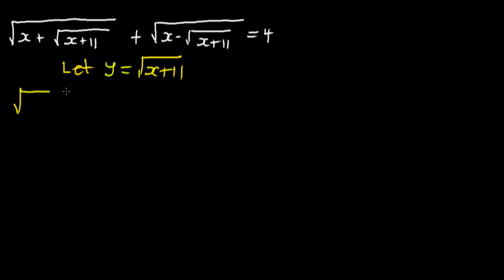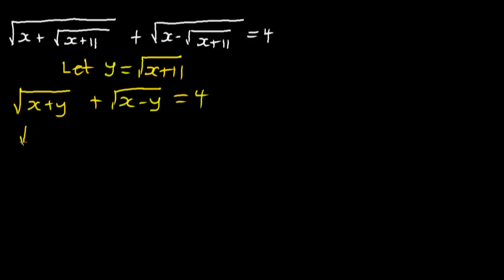The equation is now going to be: the square root of X plus Y, plus the square root of X minus Y, equals 4. From here I'll transpose the square root term to the right-hand side, so we have the square root of X plus Y equal to 4 minus the square root of X minus Y.